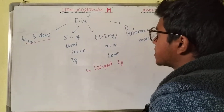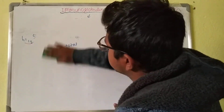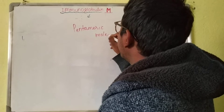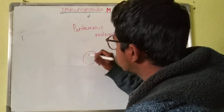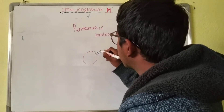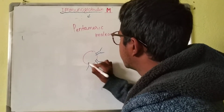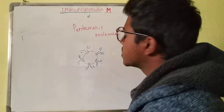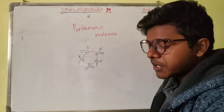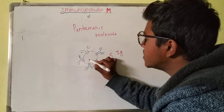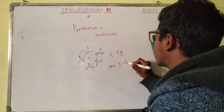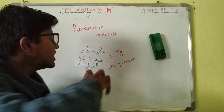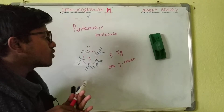Coming on to why it is a pentameric molecule: it is present five in number as a single molecule. There are five immunoglobulins attached to each other, and there is only one J chain joining all five immunoglobulins together. That is the IgM, and that is why it is a large macromolecule.